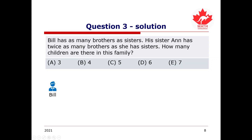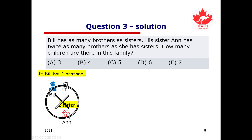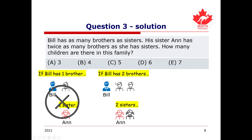Let's work through some situations. What if Bill had one brother? For the first statement to be true, Bill must also have one sister — Anne. But then Anne has no sisters, and she can't have twice as many brothers as sisters because she'd need zero times two to equal one, which won't work. So this situation is incorrect. What if Bill had two brothers? Then he'd have two sisters, satisfying the first statement.